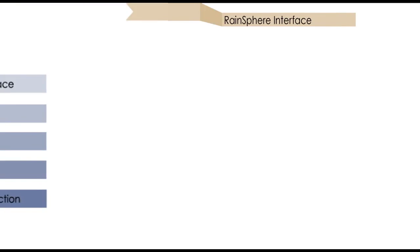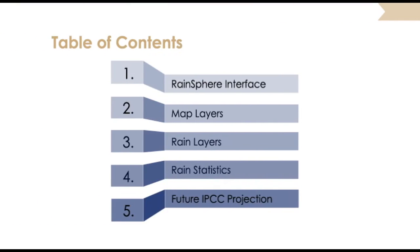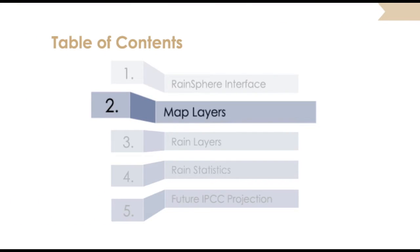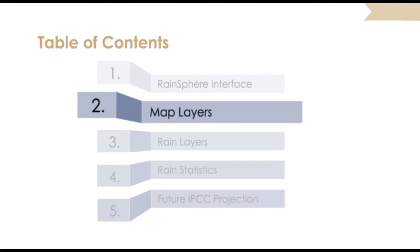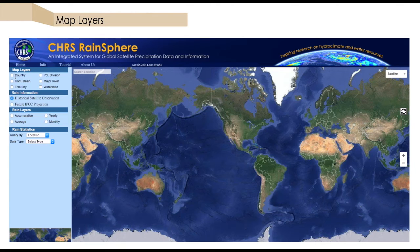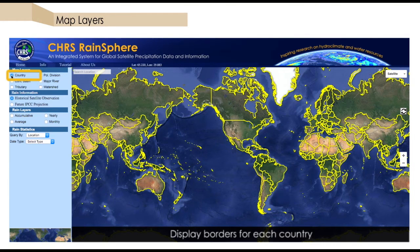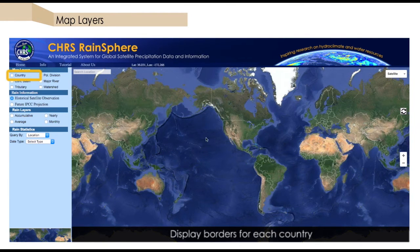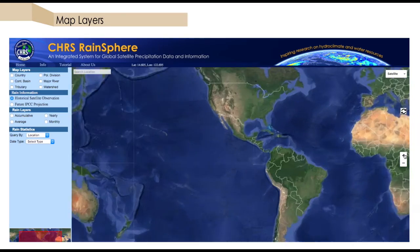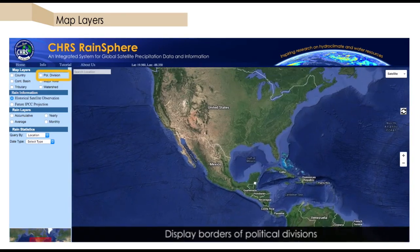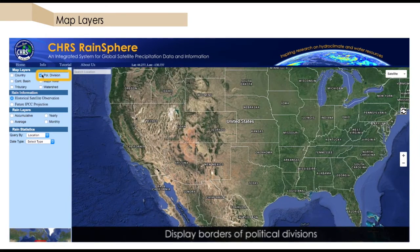Several varieties of map layers are available to aid in data viewing and selection. For human-defined boundaries, we can display country borders, or at the finer scale, we can display other political boundaries such as states and provinces.